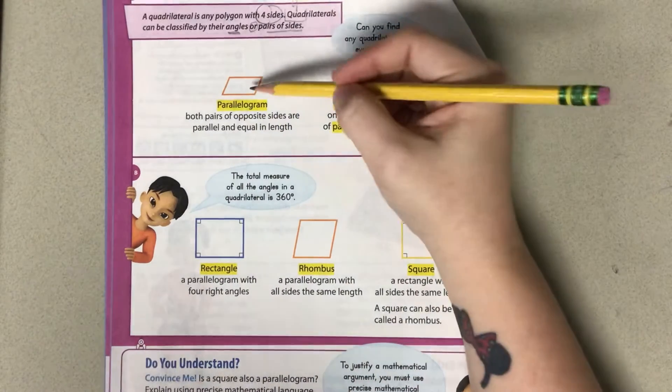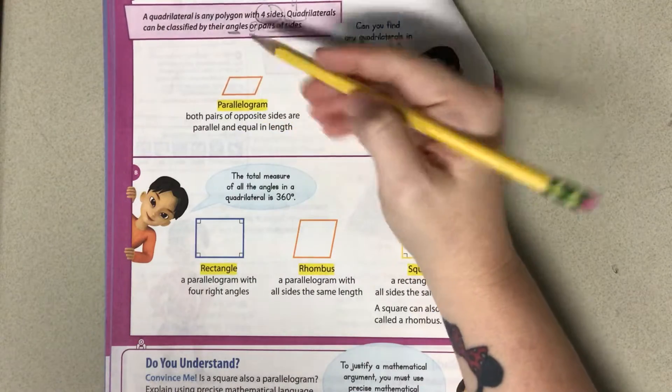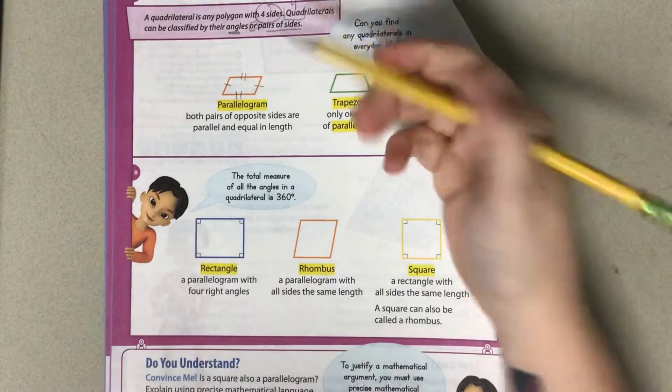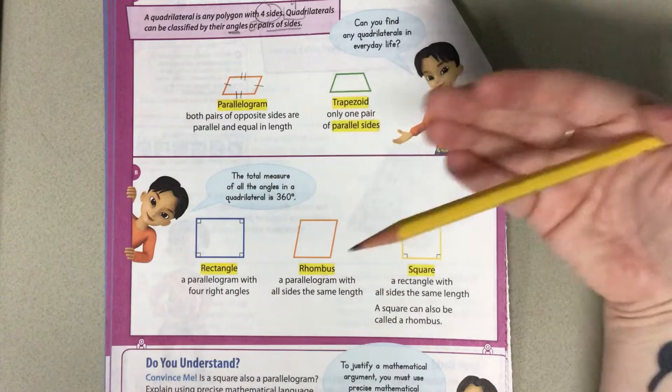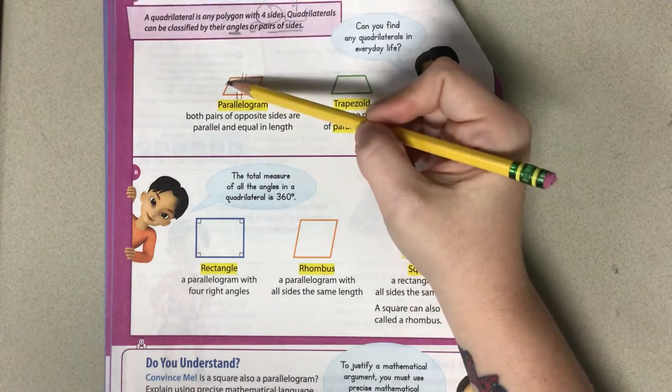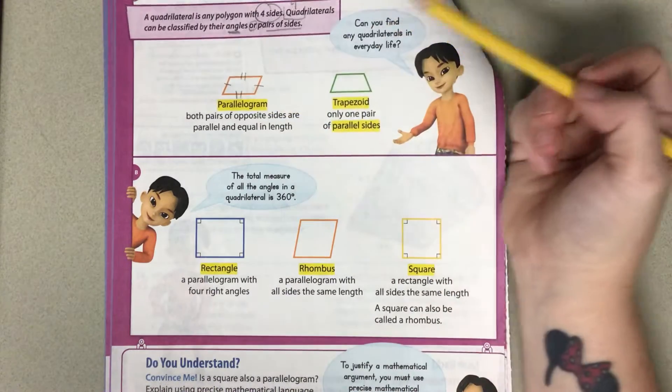A parallelogram means both pairs of opposite sides are parallel and equal in length. So these two are the same, and then these two are the same. When you do the dashes in the side, that's just showing you which sides are parallel or the same. These two both have one dash, and these both have two dashes.